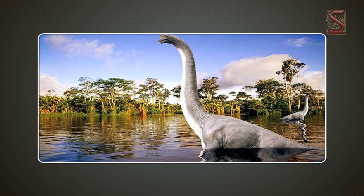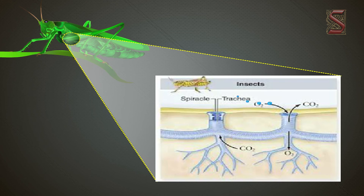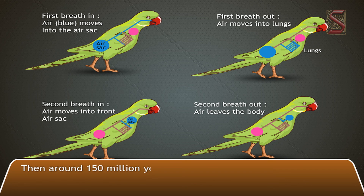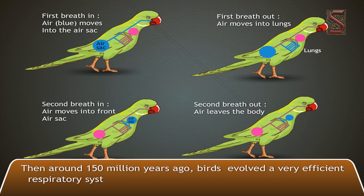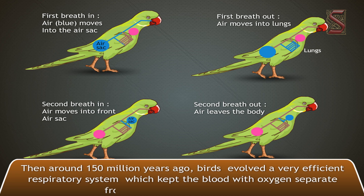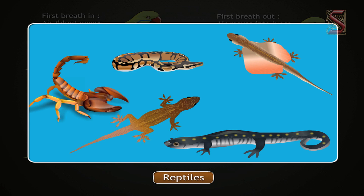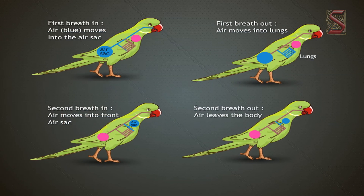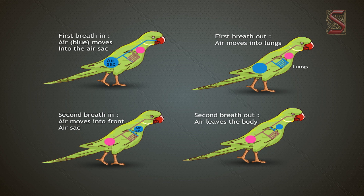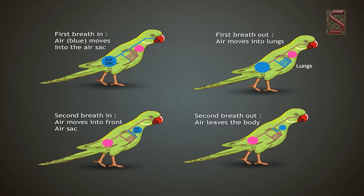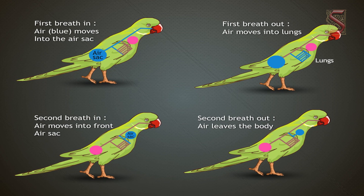Insects like grasshoppers developed a tracheal respiratory system through which air could directly reach the cells. Then, around 150 million years ago, birds evolved a very efficient respiratory system which kept oxygenated blood separate from deoxygenated blood. Mammals that evolved from reptiles did the same thing. It is interesting to note that all birds and mammals have essentially the same respiratory system — a more efficient system that allows processing more oxygen faster, so you can run faster, think better, and be more active.